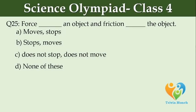Force dash an object and friction dash the object. Option A: Moves, stops. Option B: Stops, moves. Option C: Does not stop, does not move. Option D: None of these.